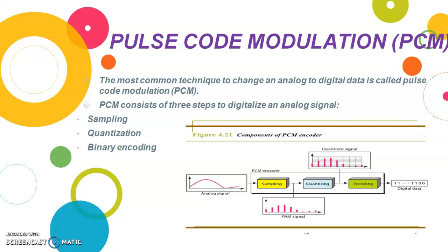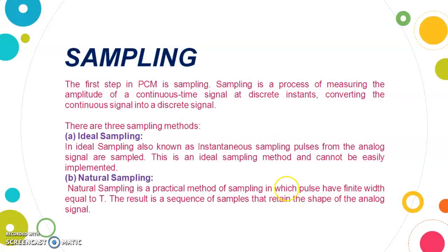This is a basic example of a PCM encoder — a machine in which first we sample our data, then we quantize our data, and then we encode the data in digital form. These are the basic components of our PCM encoder. Now first is the sampling of data.